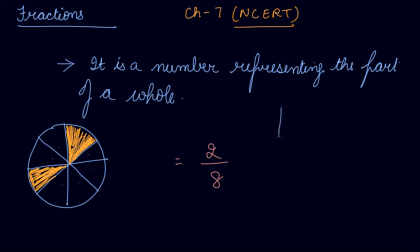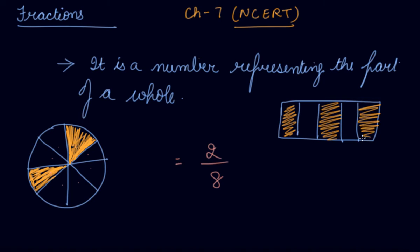Now, let's take another example. I am shading these parts of a rectangle. Take out the fraction from it. The total number of parts in which the rectangle is divided: 1, 2, 3, 4, 5.